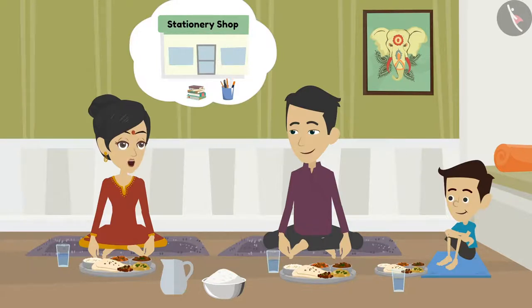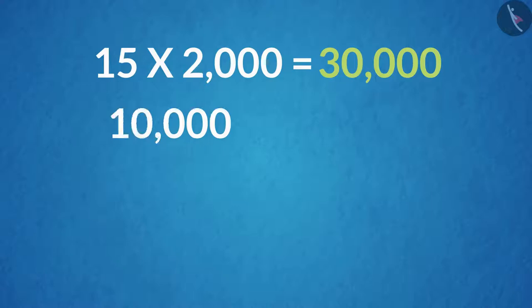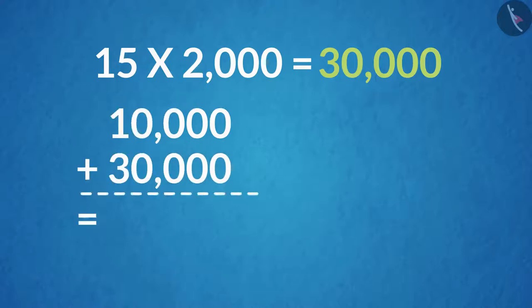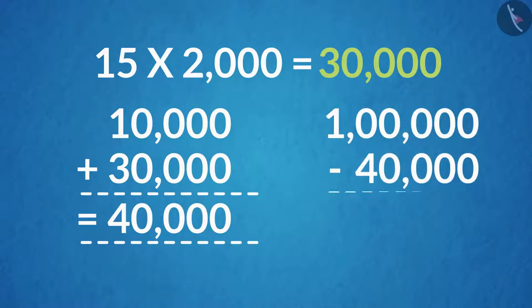Multiply 15 by 2,000. If we multiply 15 by 2,000, we get 30,000 rupees. That means we have a total of 10,000 plus 30,000, which is equal to 40,000 rupees. But I need rupees 1 lakh for this purpose.